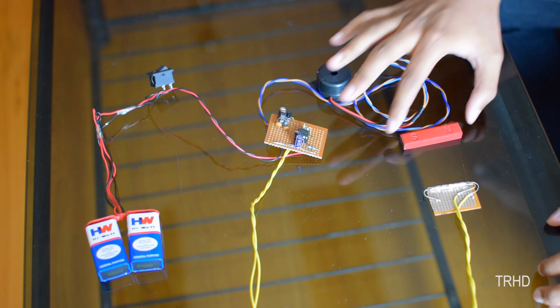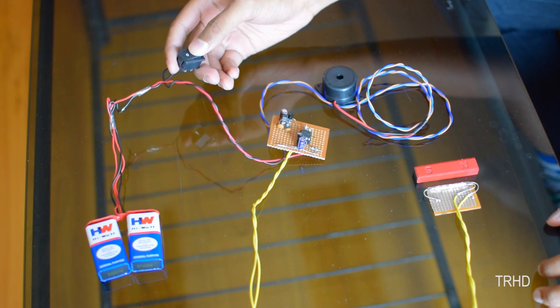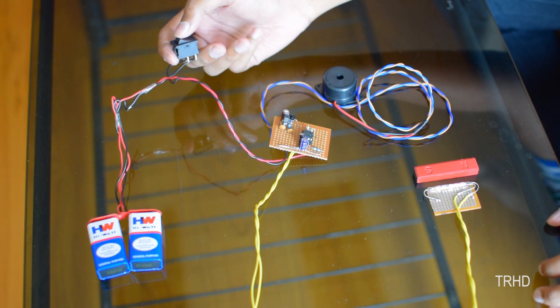Now, it won't switch off even if the door is closed back. To reset this thing, you have to switch off the supply like this. The buzzer goes off.